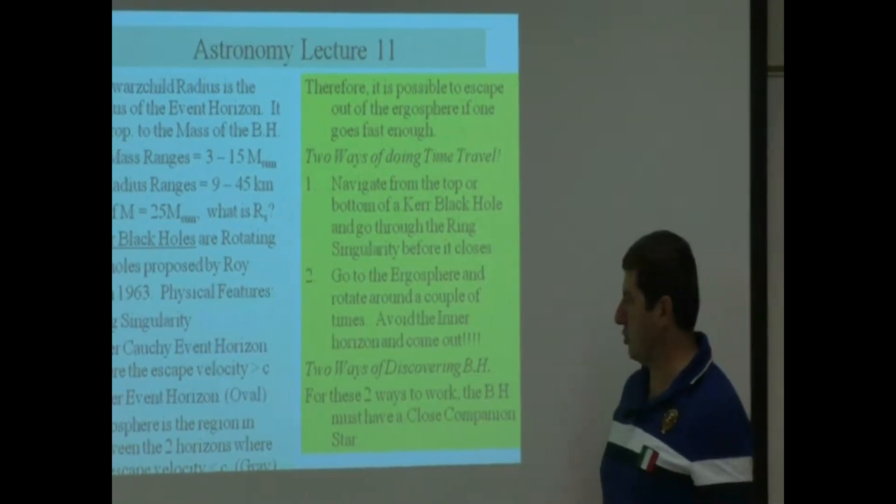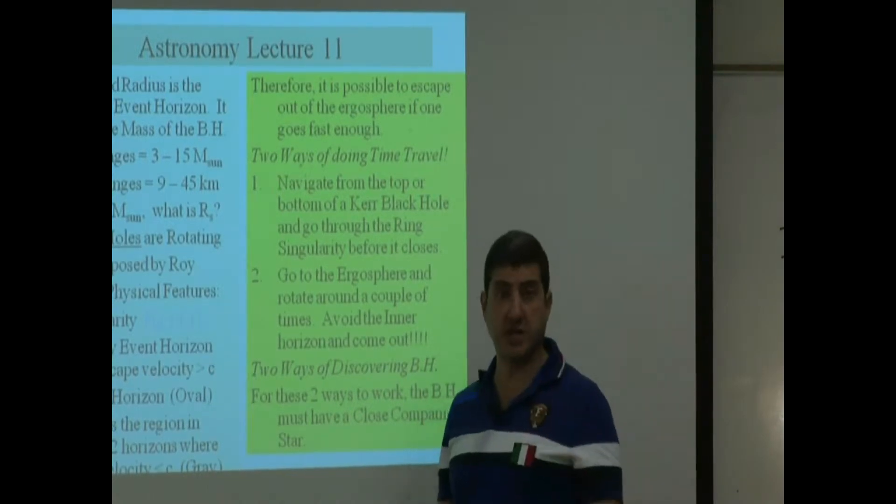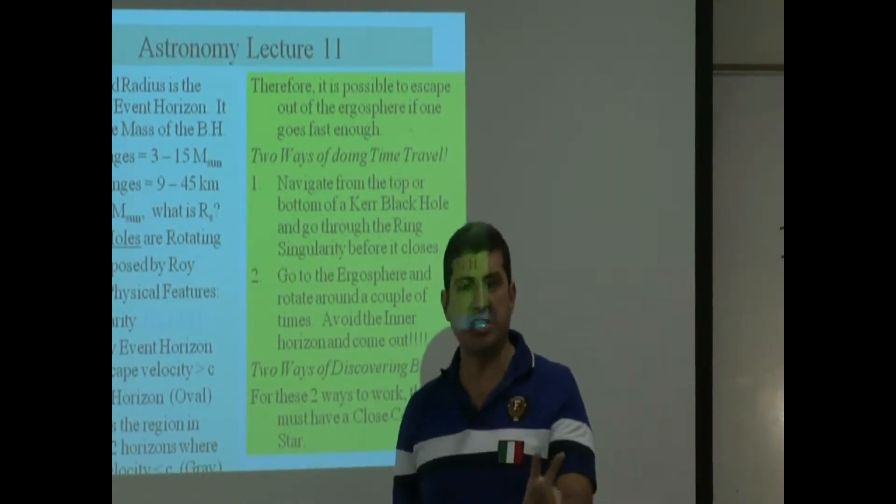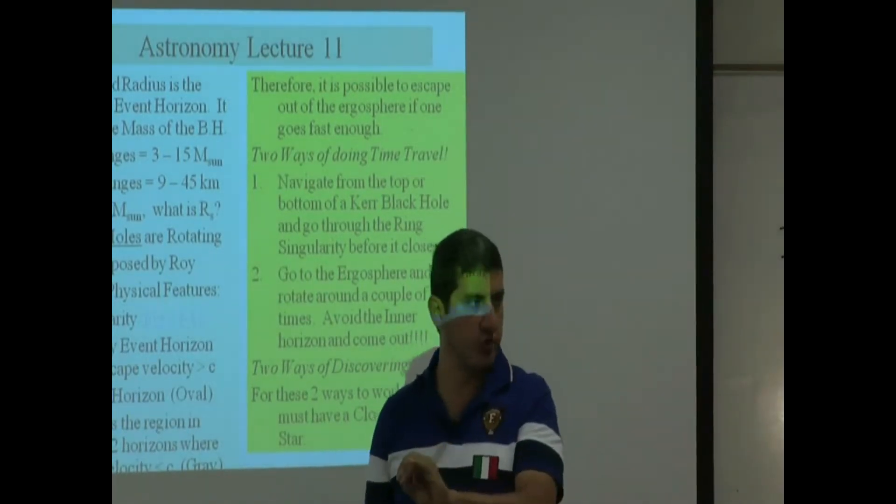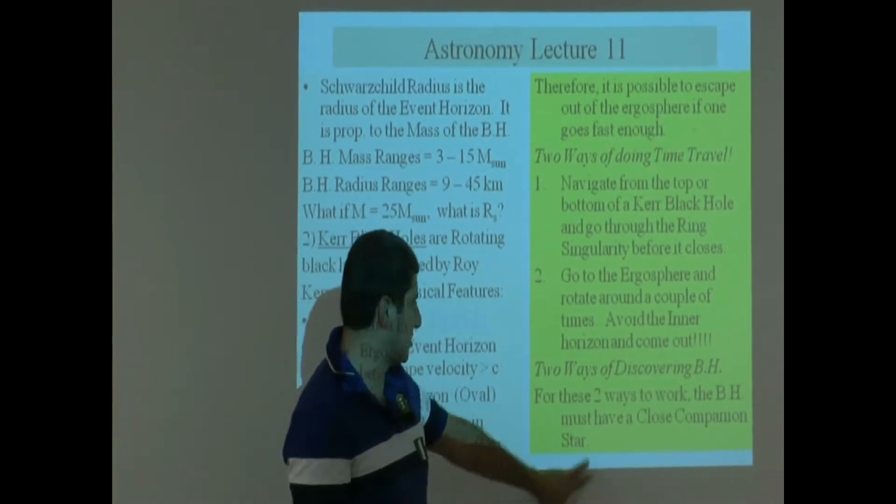Two ways of discovering black holes. However, in order for these two ways of discovering them to work, the black hole needs to have a companion star at least somewhat close to it. So these two ways to work, the black hole must have a close companion star.